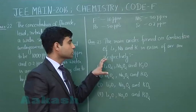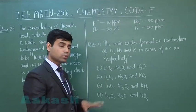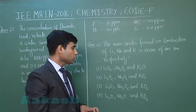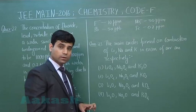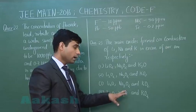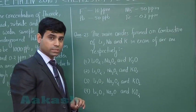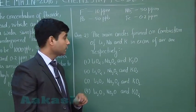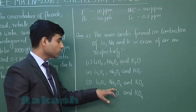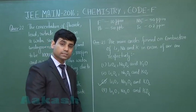The next question: the main oxides formed on combustion of lithium, sodium, and potassium in excess of air are respectively — options include Li₂O/Na₂O₂/K₂O₂ among others. As we know, lithium gives oxide (Li₂O), sodium gives peroxide (Na₂O₂), and potassium gives superoxide (K₂O₂) on combustion. So the correct answer is option three: Li₂O, Na₂O₂, and K₂O₂.